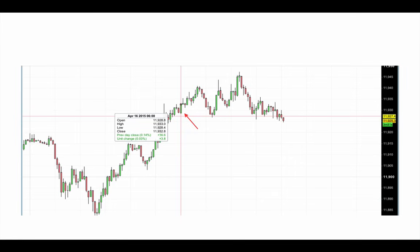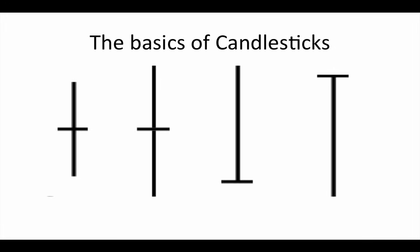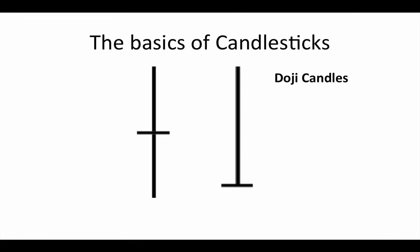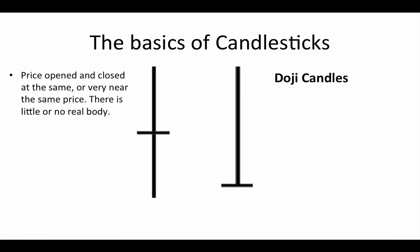You'll see one other type of candle on your charts and they look like these. As you can see, these candles have little or no real body — they're known as doji candles. What a doji candle is telling you is that price opened and closed at the same or very near to the same price, as indicated by little or no real body. So although the price may have moved quite significantly during the time period, it closed back on or very near to its opening price.